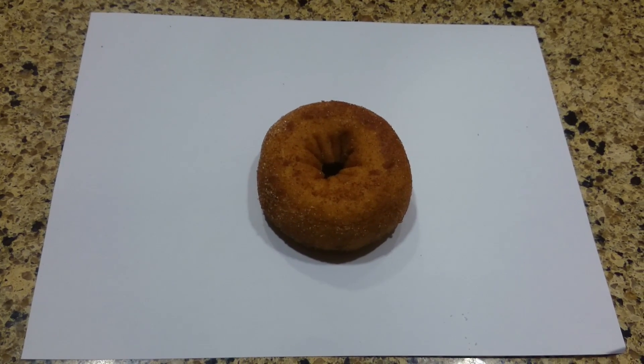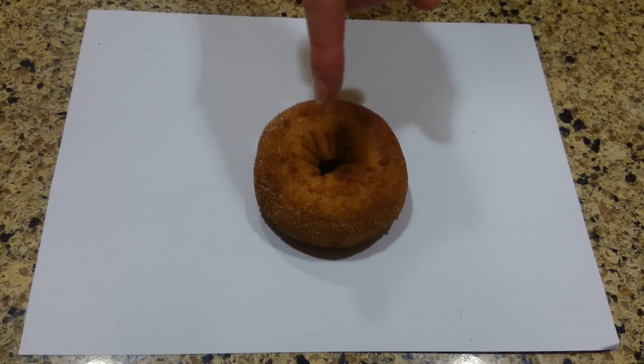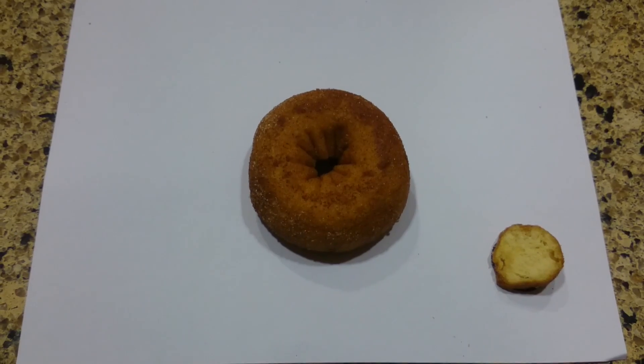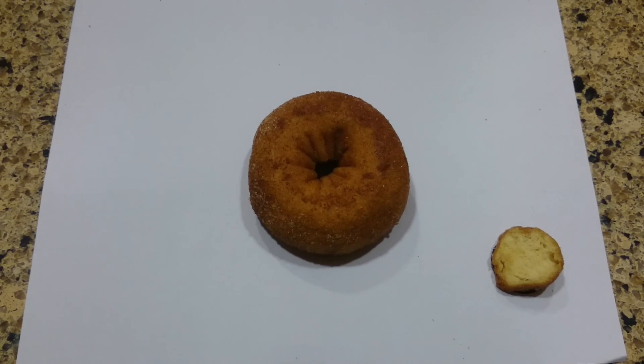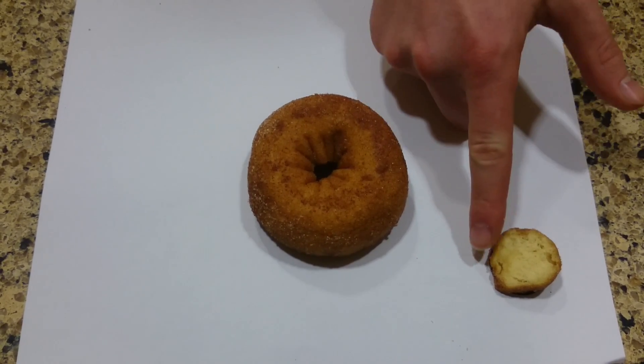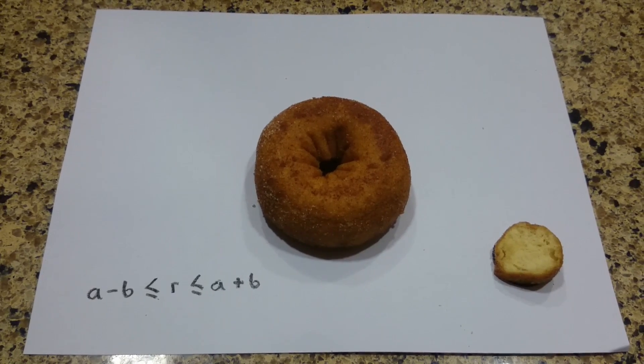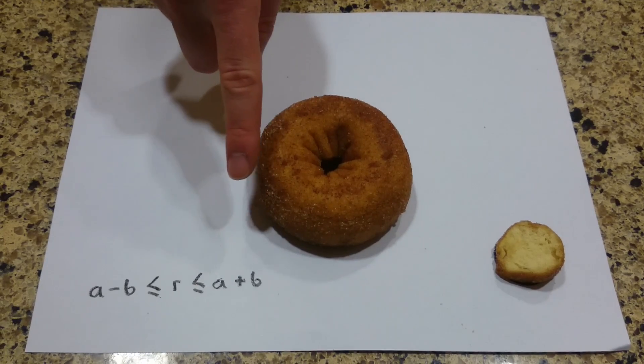The actual value of r, however, goes from the outside of the donut slice to the inside. This is because the donut slices are circles with radiuses, which we will call b. So we know r ranges from a minus b to a plus b.